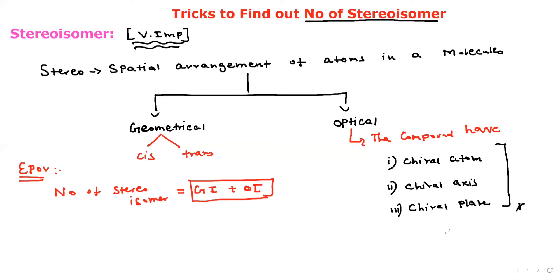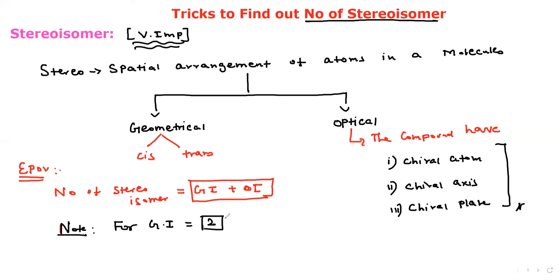Now note the trick. For geometrical isomerism with one double bond, there are always only two isomers — one cis and one trans.